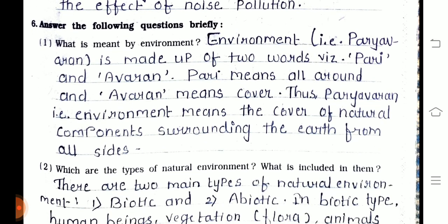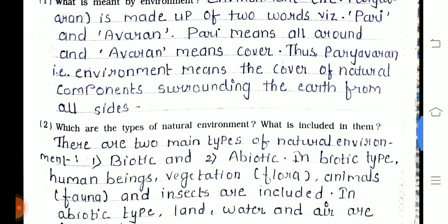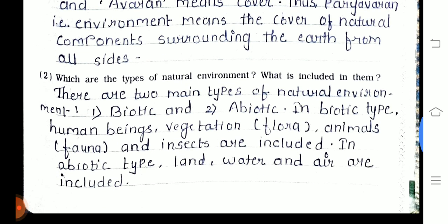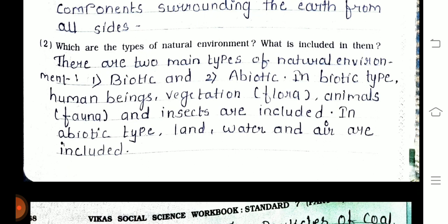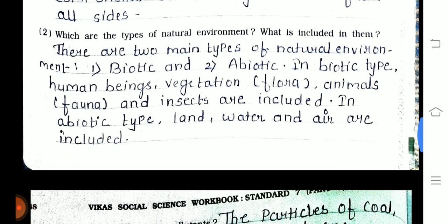Question number six — answer the following questions briefly. First one — what is meant by environment? Environment is made up of two words: 'pari' and 'avran.' 'Pari' means all around, and 'avran' means cover. Thus, 'paryavaran' (environment) means the cover of natural components surrounding the earth from all sides.